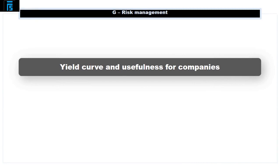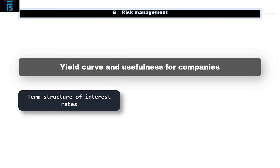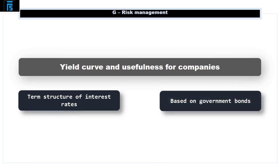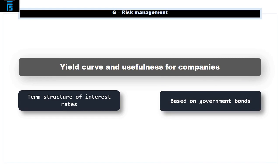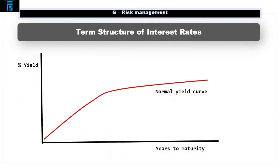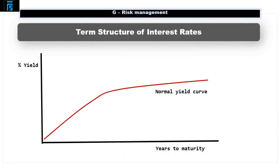The yield curve and how it can help companies determine their approach. The term structure of interest rates looks at the yield on bonds and how this varies with the maturity of the bond. It is usually based on government bonds and enables companies to establish a view as to the likely movement in interest rates. As can be seen from the graph, a normal yield curve is upward sloping, indicating that loans get more expensive the longer they are.